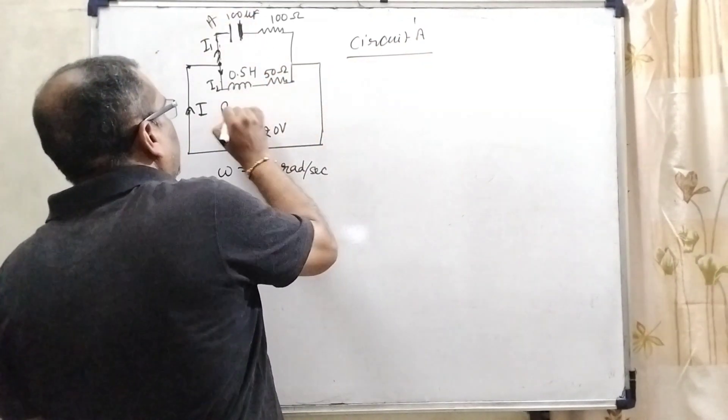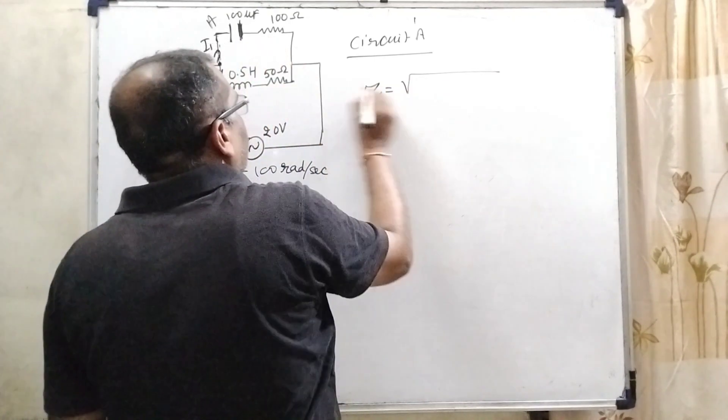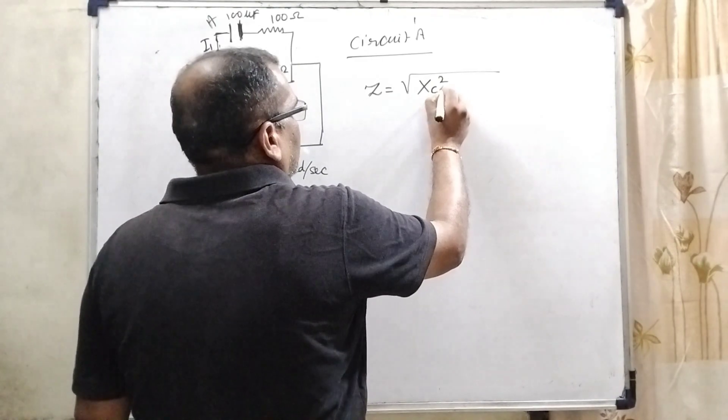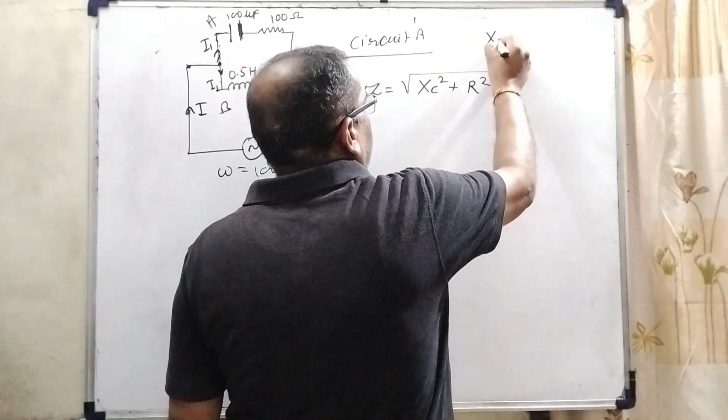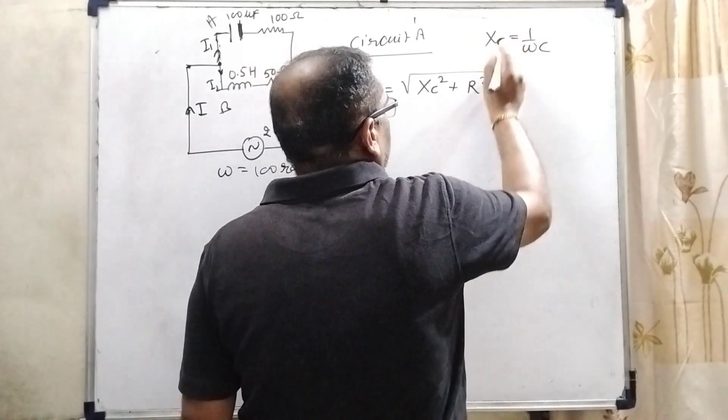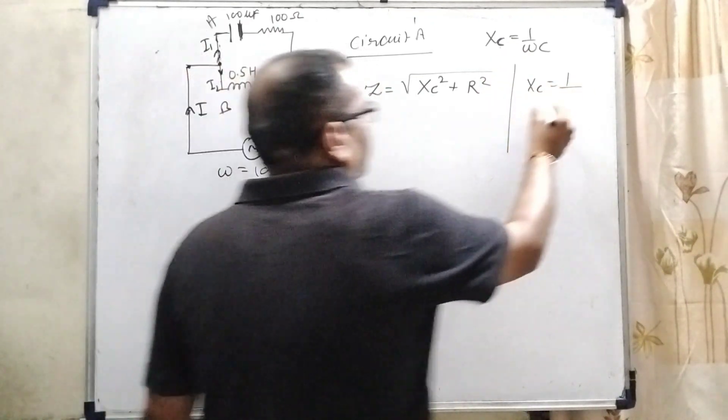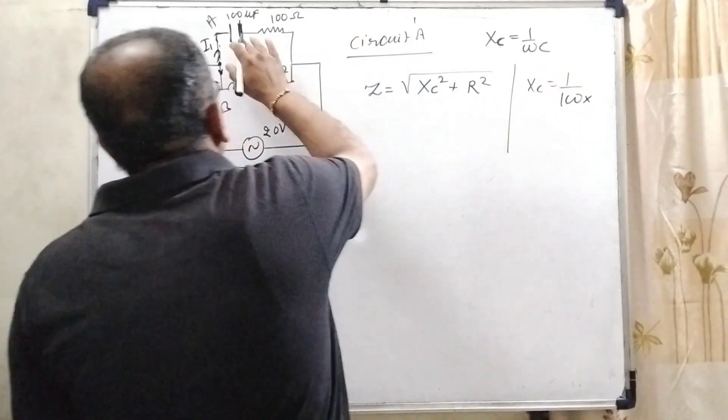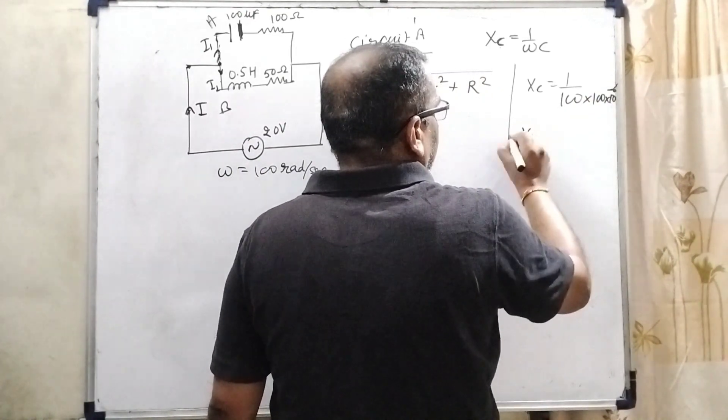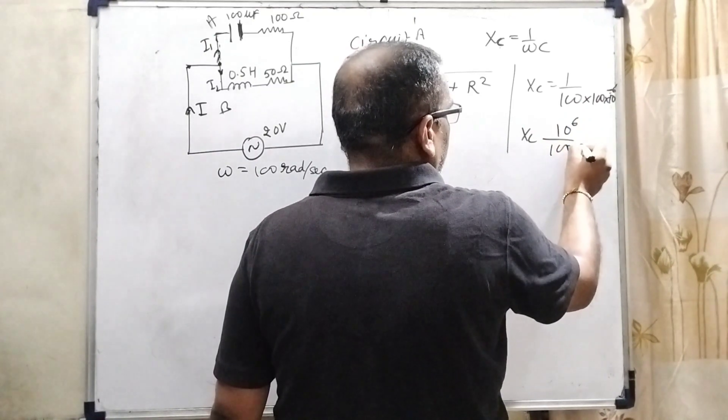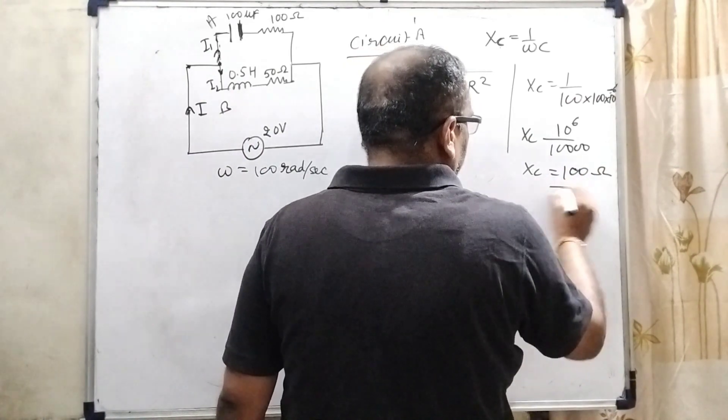In the circuit, first, let us consider this is circuit A and this is circuit B. Here, impedance Z equal to capacitance reactance XC square plus R square. Before we have to solve this, XC we know that is 1 over omega C. So here, what is omega given? Omega is given 100. And what is C? Capacitance is given that 100 microfarad means 100 times 10 raise to power minus 6.